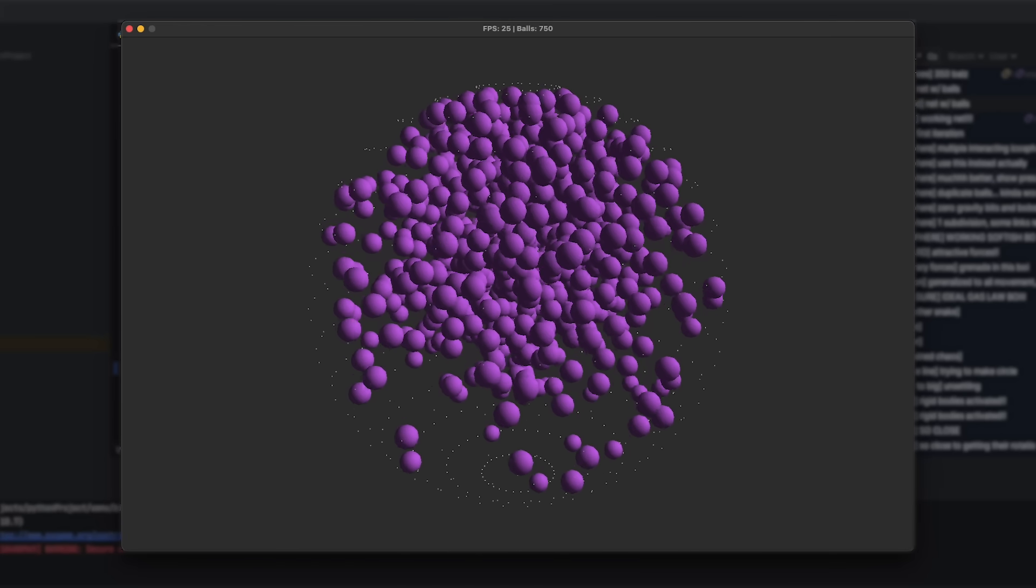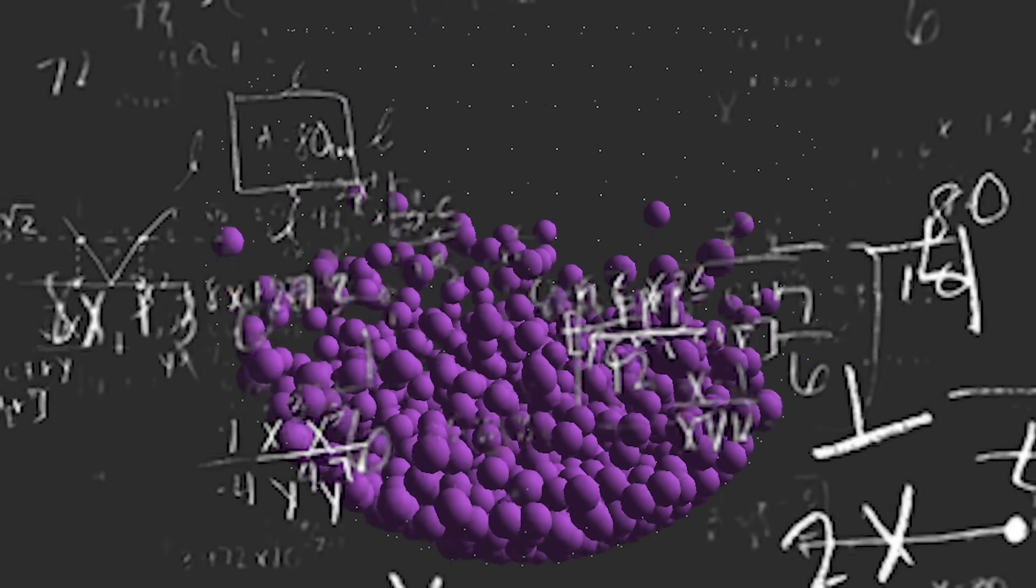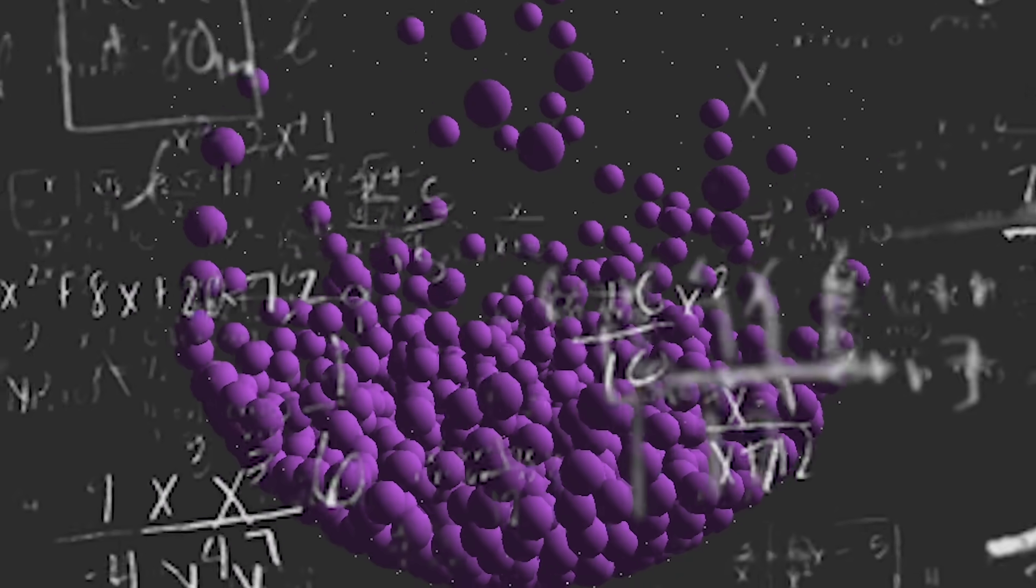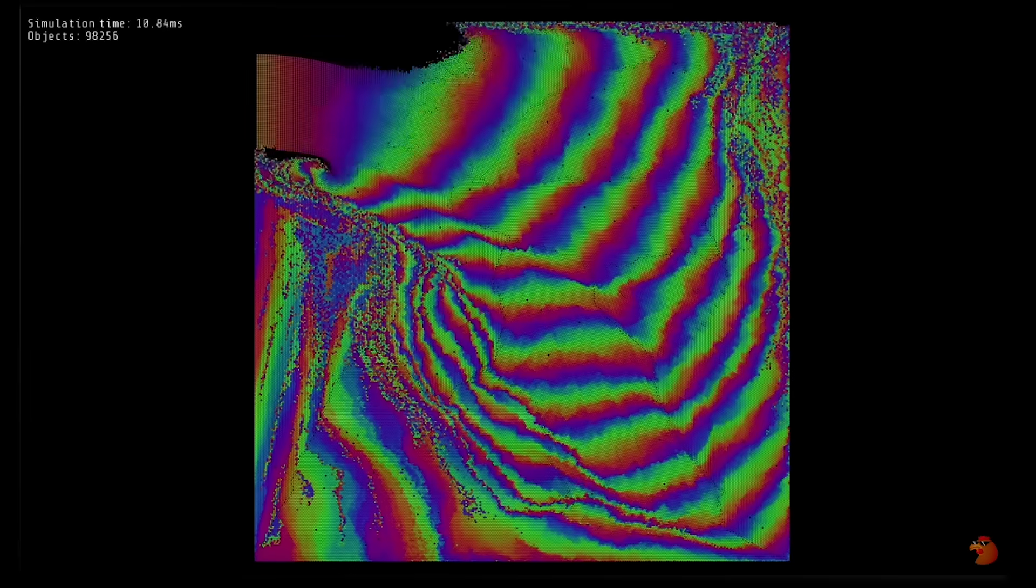Fast forward and I quickly realized that Python was not going to cut it. No matter how many optimizations and different algorithms I tried, I just couldn't get more than a few hundred particles on the screen, while Pez is over here with, what was it, a hundred thousand? Are you serious? Something had to be done.